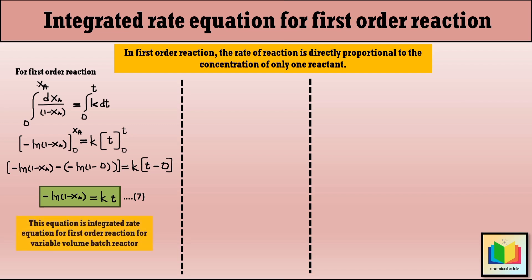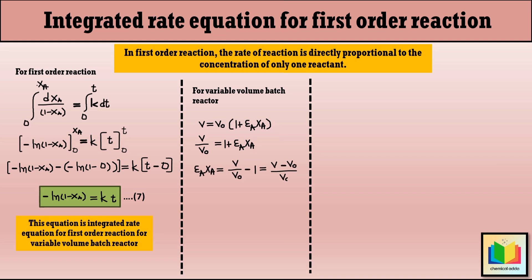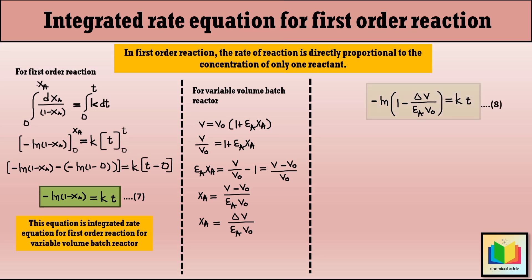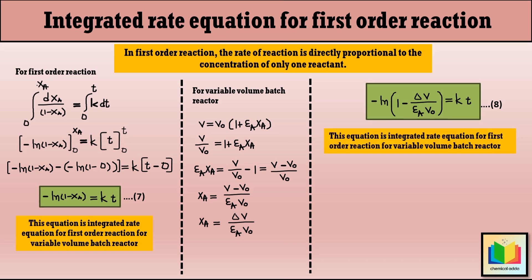In a variable volume batch reactor, the volume varies linearly with conversion: V equals V_0·(1 + ε_A·X_A). Solving for X_A, we get: X_A equals ΔV/(ε_A·V_0). Substituting this into equation 7 gives: minus ln(1 − ΔV/(ε_A·V_0)) equals K·T. This is another form of the integrated rate equation for a first-order reaction in a variable volume batch reactor.